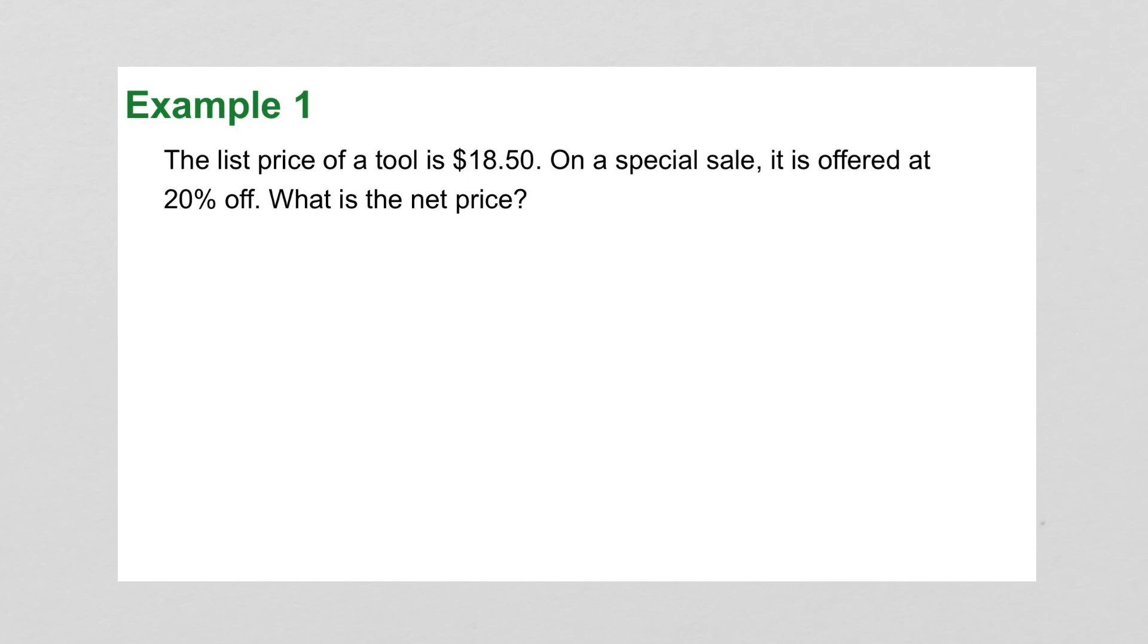For example 1, the list price of a tool is $18.50. On a special sale, it is offered at 20% off. What is the net price? So the original price goes on the bottom, $18.50. We're looking for the discounted price, the net price, and it was 20% off. We'll cross multiply. D times 100 is 100D. $18.50 times 20 is $370, and $370 divided by 100 is $3.70.